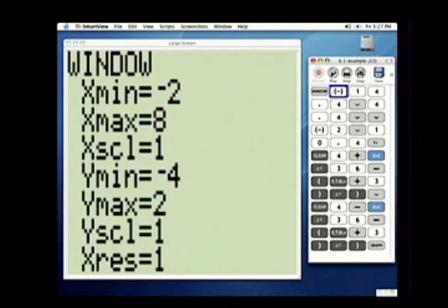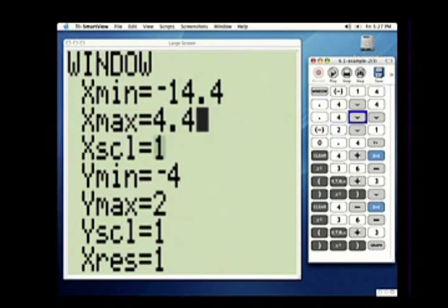So the minimum for x is going to be -14.4. The minimum for, I'm sorry, the maximum for x is going to be 4.4. The scale we'll leave at one. The minimum for y is going to be -2. And the maximum for y is going to be 10.4.